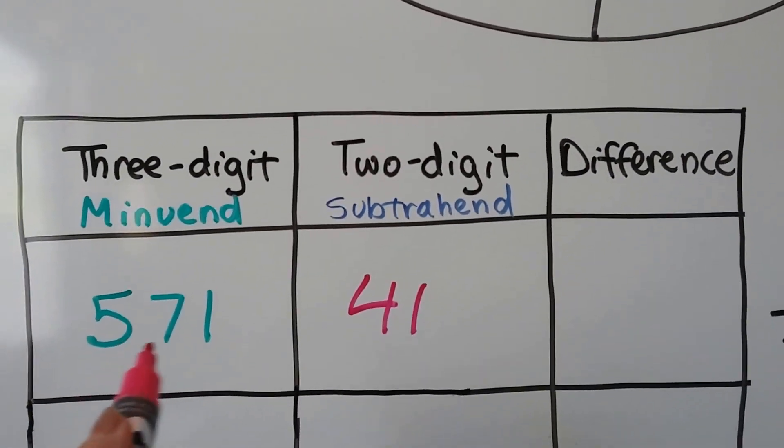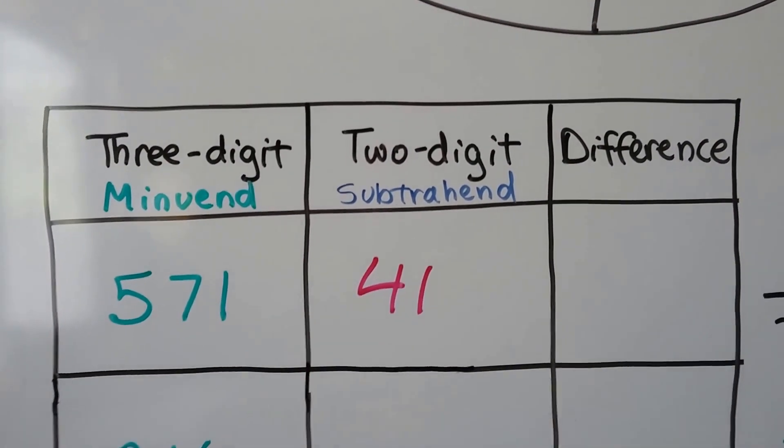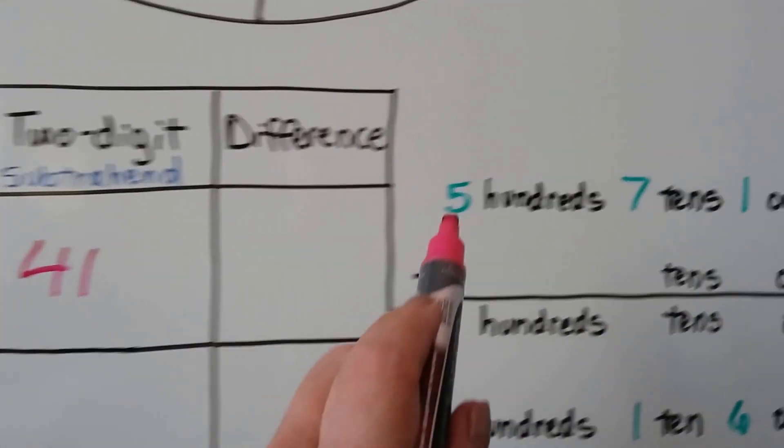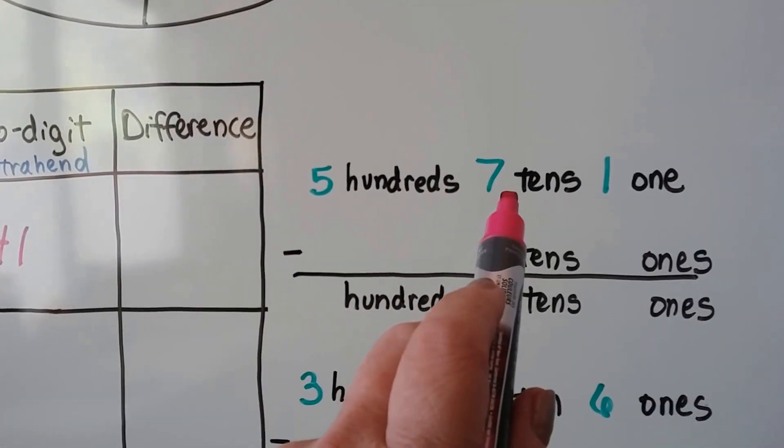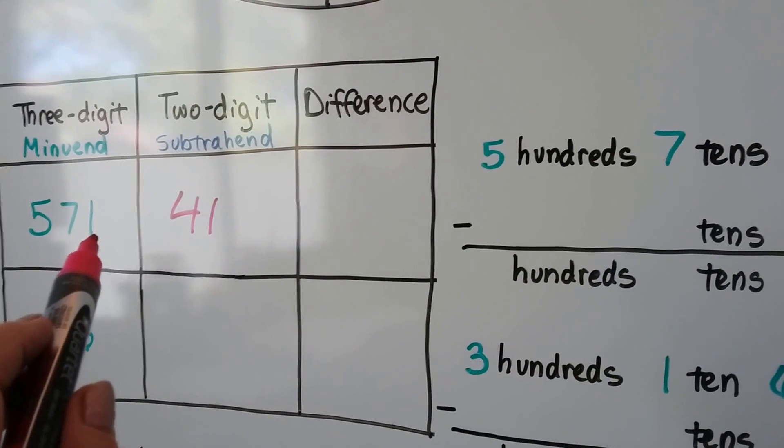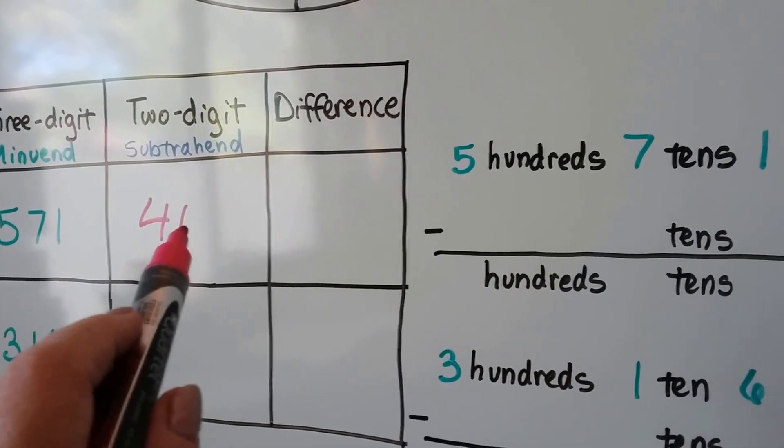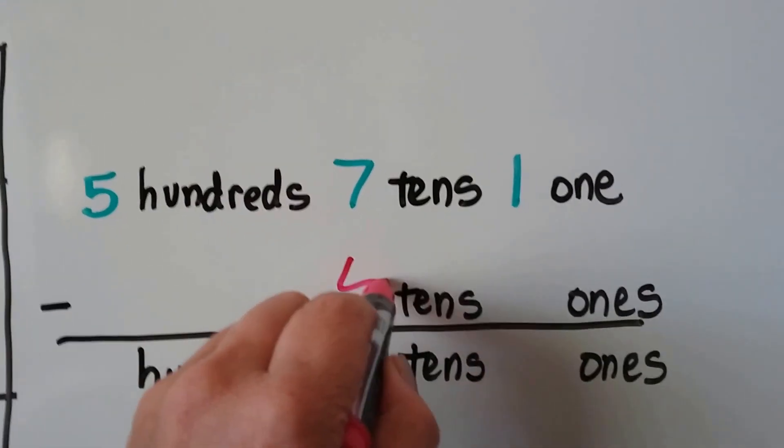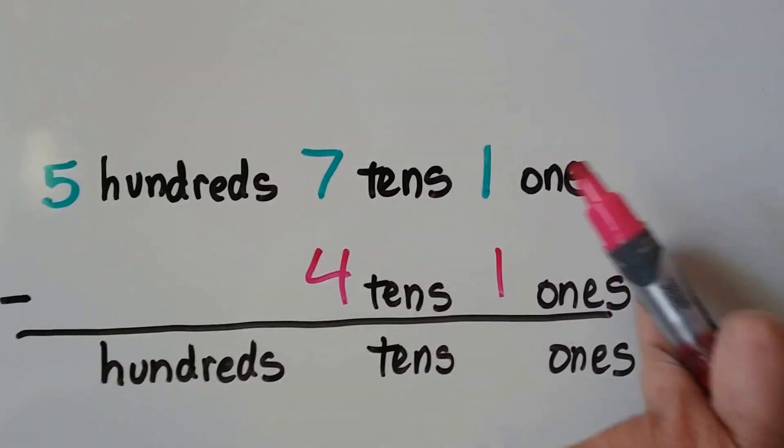So now we have 571 minus 41. So that means we have 5 hundreds, 7 tens, and 1 one. 5 hundreds, 7 tens, and 1 one. We're going to subtract 4 tens and 1 one. 4 tens and 1 one.